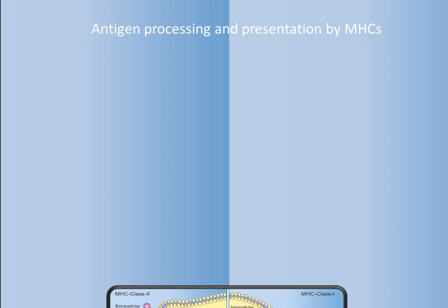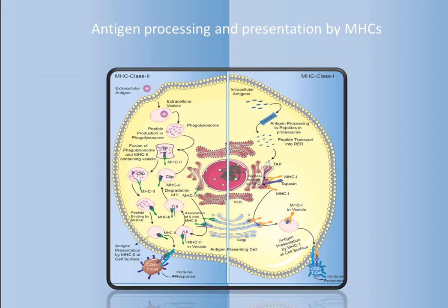Hello, everyone. Today I will introduce antigen processing and presentation. Antigen presentation in an organism is accomplished by antigen-presenting cells, APC. Antigen-presenting cells are a kind of cells capable of processing antigens and presenting antigen peptides to T-cells in the form of antigen-peptide MHC molecular complexes, and play an important role in immune recognition, immune response and immune regulation of the body.